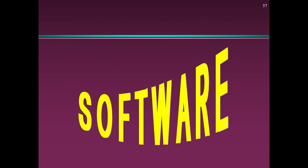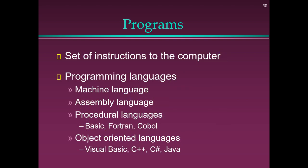Software: Programs are sets of instructions to the computer. Programming languages include Machine Language, Assembly Language, Procedural Languages (Basic, Fortran, COBOL), and Object-Oriented Languages such as Visual Basic, C++, C#, and Java.